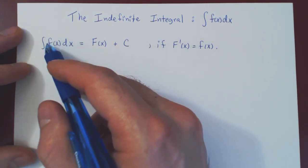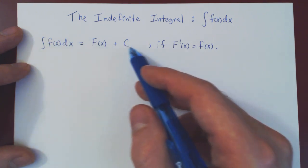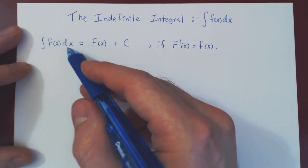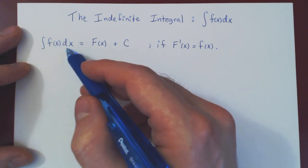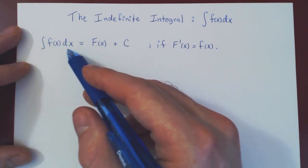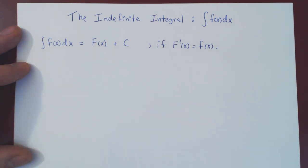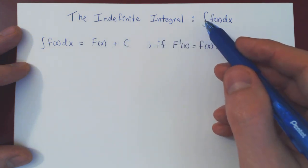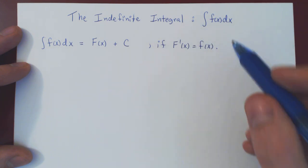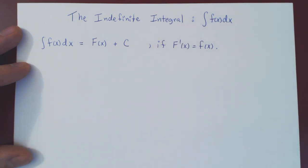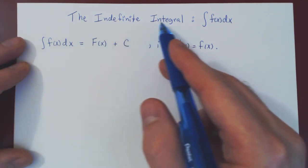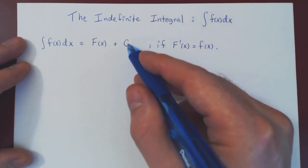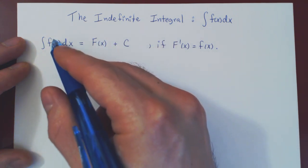That is the indefinite integral — simply asking for all functions whose derivative is equal to the original function. Granted, this notation might look rather strange. Why do we use this bizarre stretched out S? Why do we use a dx? Don't worry about this right now — take this for granted. Later on, we'll consider the so-called definite integral, and then we'll see why this notation, although it looks bizarre right now, actually is very intuitive and makes perfect sense. For now, just think of it this way: the indefinite integral of f of x is denoted by the integral sign f of x dx, and all it is is the collection of all antiderivatives of lowercase f of x.